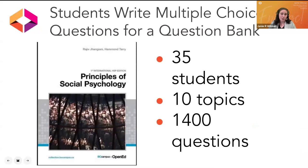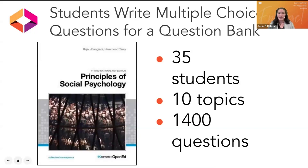In this social psychology course, 35 students wrote over 1,000 multiple-choice questions to create a test bank accompanying the OER textbook they used in class. Not only does this encourage the deep learning that comes from synthesizing subject matter, but it contributed to the public knowledge commons — because this OER did not have a test bank previously. Assignments like this create higher levels of intrinsic motivation, often leading to higher levels of success, and deconstruct traditional power structures by centering students' sense of agency and belonging.